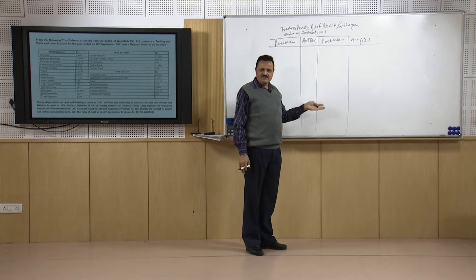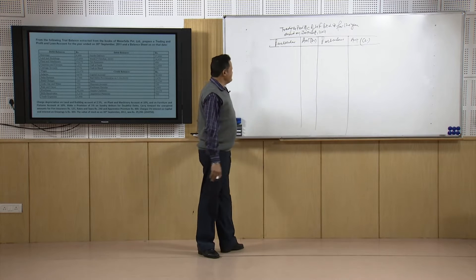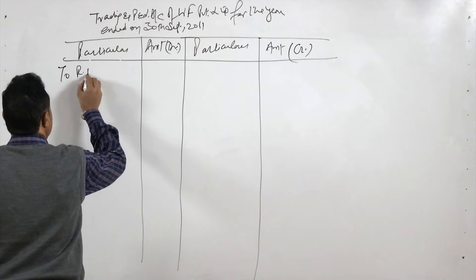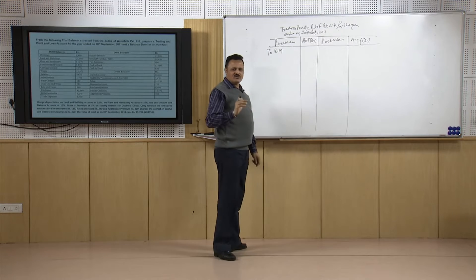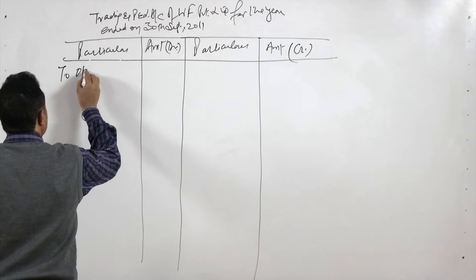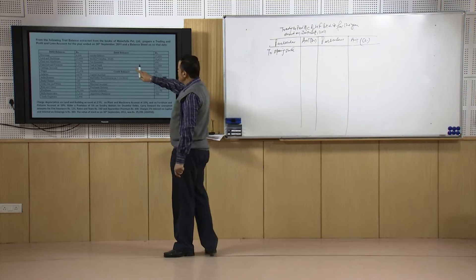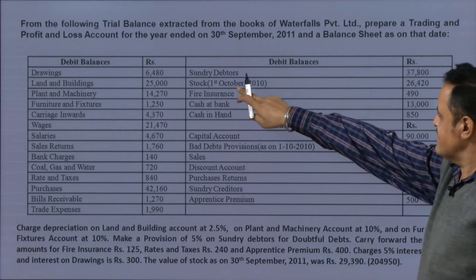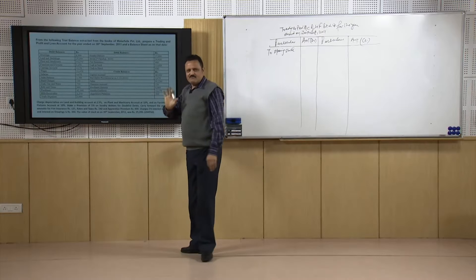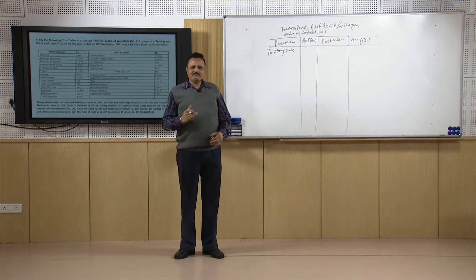All expenses are placed on the debit side and all incomes on the credit side. The difference will first be the gross profit, and then in the lower part the net profit — first before tax and then after tax. We start with the raw material, which is calculated from two balances: first is the opening stock of raw material.